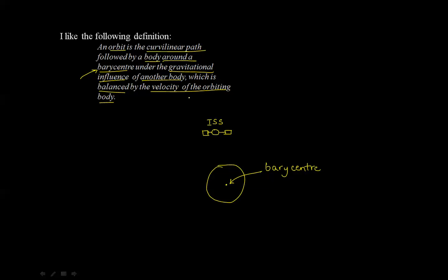Now, the ISS is following a curvilinear path around the barycenter, which means it is in a closed orbit around the Earth. And it is under the gravitational influence of another body, another body simply being the Earth itself. Let's write it down. Earth.